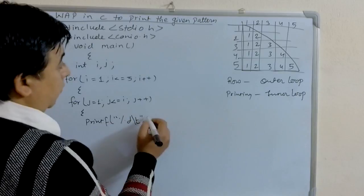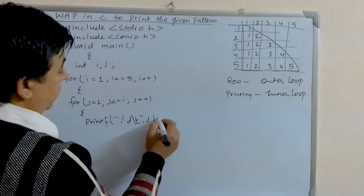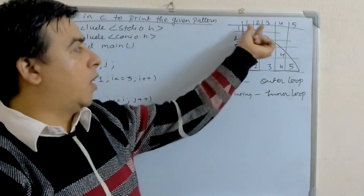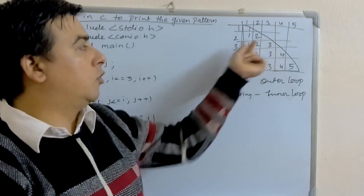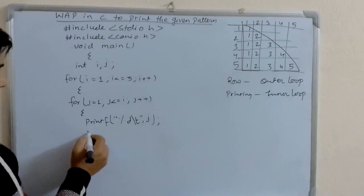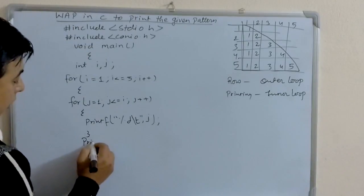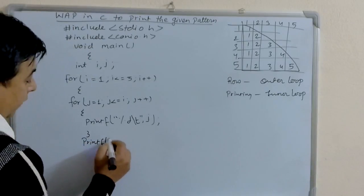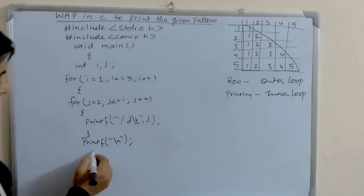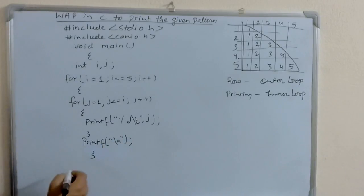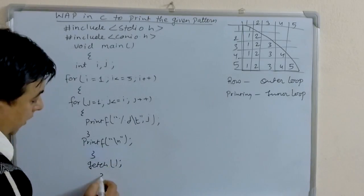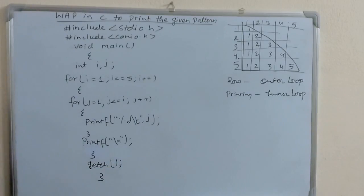We have to print j, because we have to print different numbers: 1, then 1 2, then 1 2 3. That's why we print j. After that, we go to the next line with printf "\n", and close the outer loop. Then write the getch() function and close the program.